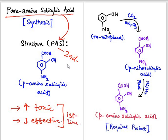Look at the structure of para-amino salicylic acid. This structure is similar to the structure of salicylic acid — this is the structure of salicylic acid — and at the para position there is an amino group substitution.